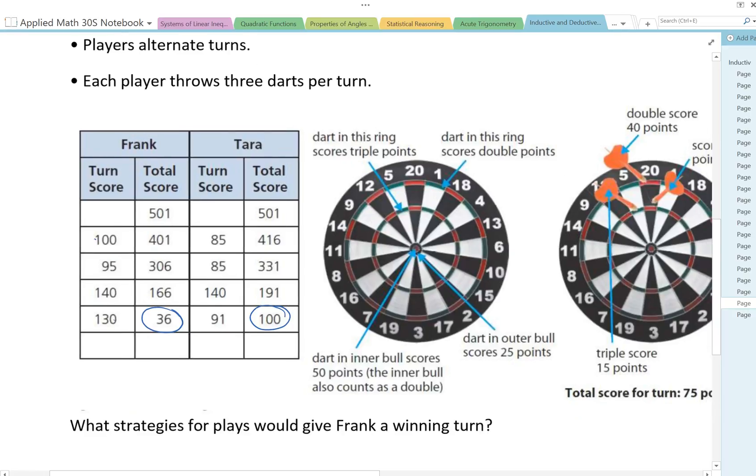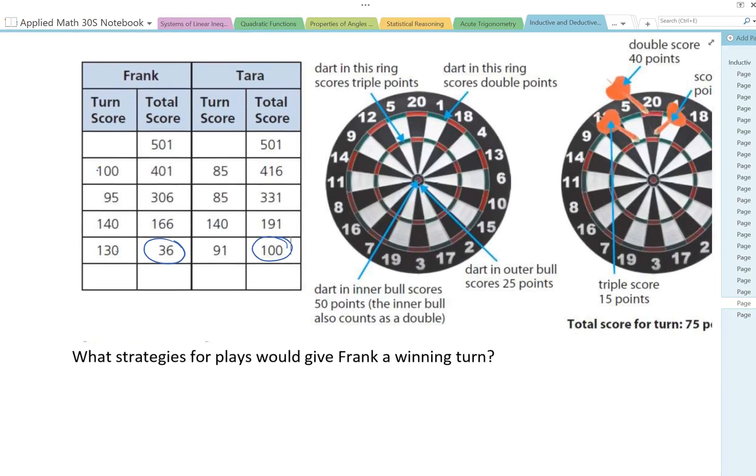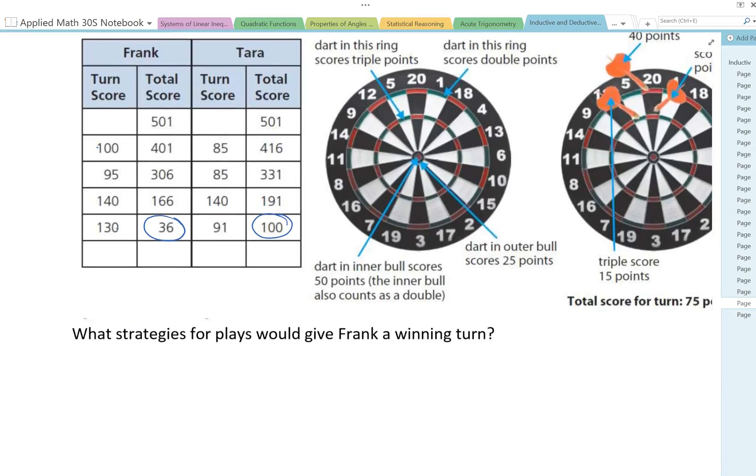So the question here is what strategies for plays would give Frank a winning turn? So what does that mean? Well he's got three throws in his turn at most. So how can he get a score of 36? You've got to think of all the different combinations of throws.